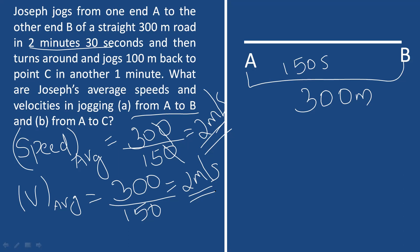Now, for part B — from A to C. Joseph travels from A to B (300 meters) and then back 100 meters to point C. Time for A to B is 150 seconds and time for B to C is 60 seconds. Total time equals 150 plus 60 equals 210 seconds.